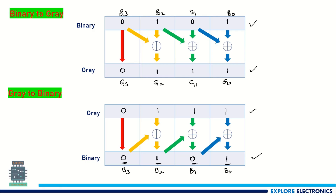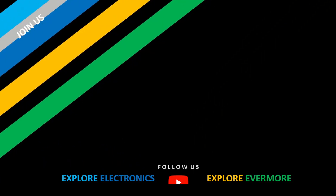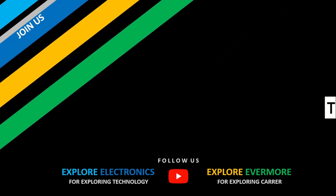The binary result is 0101, which matches the original binary number we started with. This confirms the conversion is correct. This is how we can convert binary to gray and gray code back to binary. Thank you.